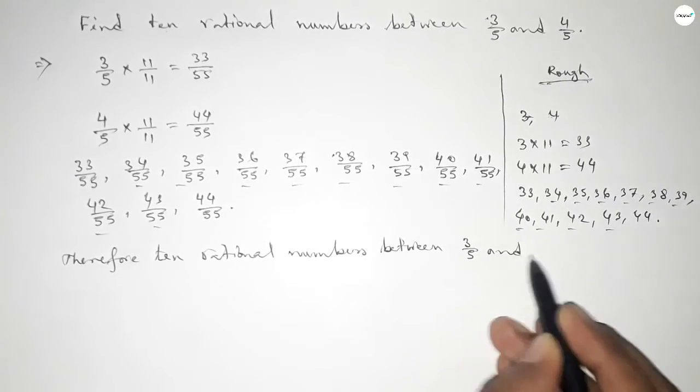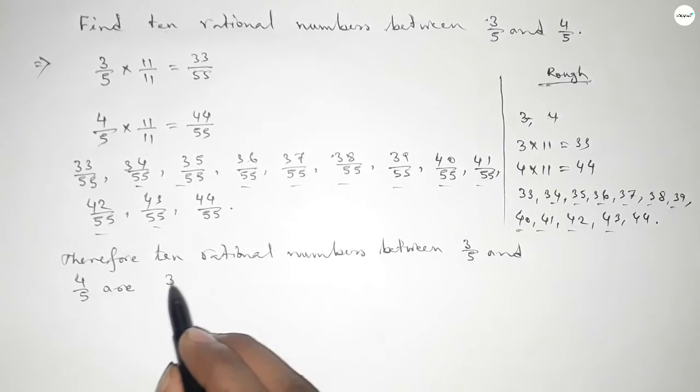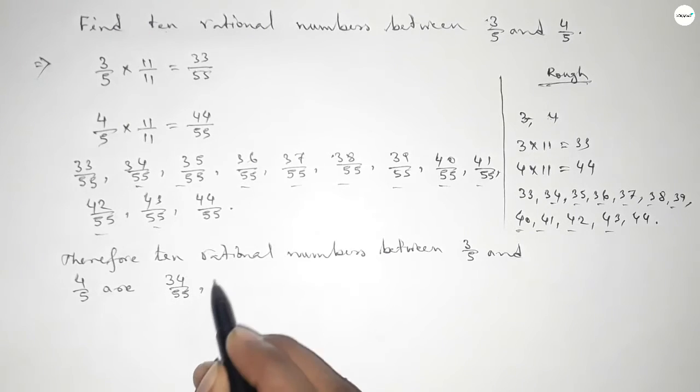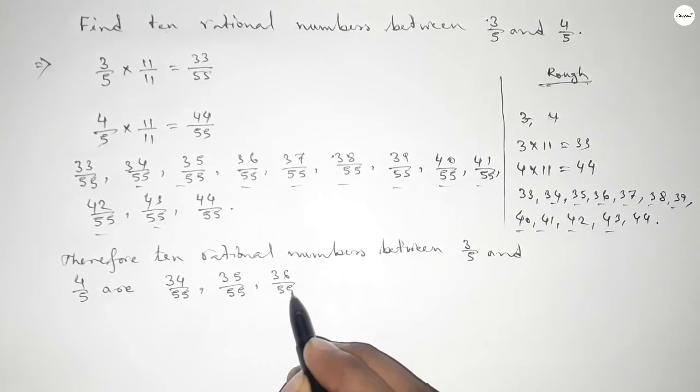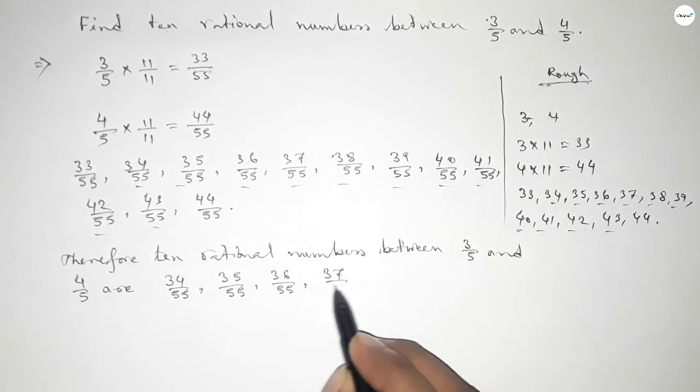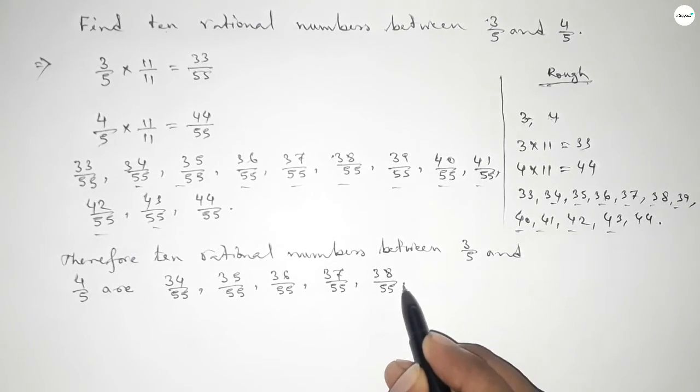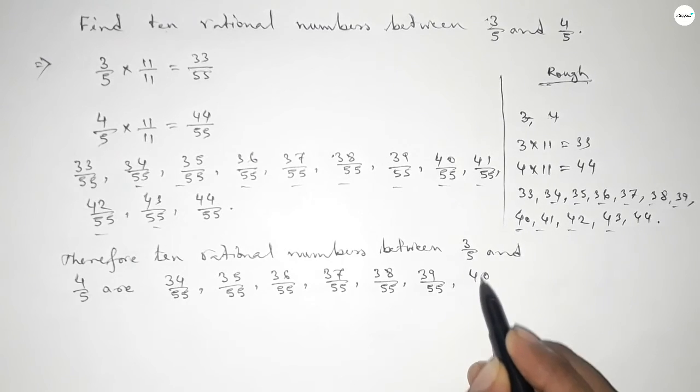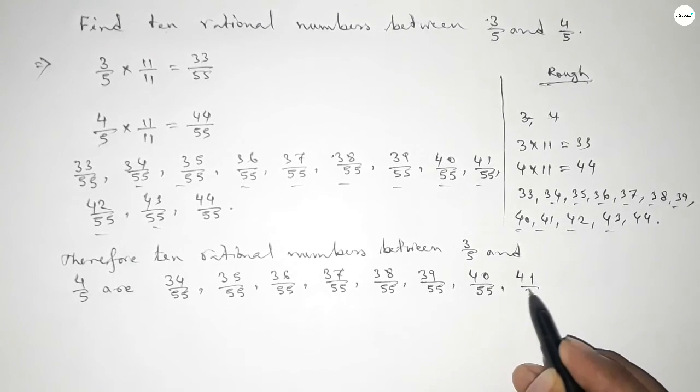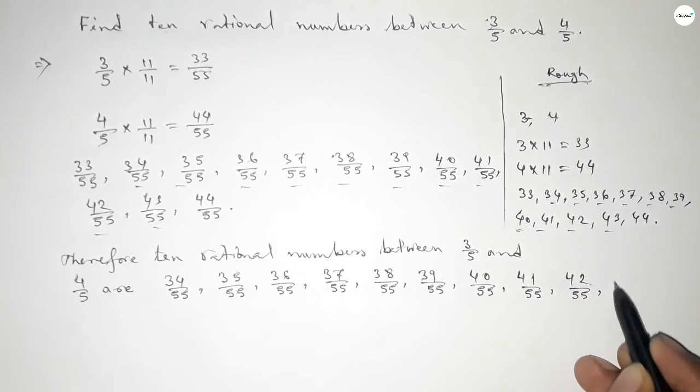First one is 34 over 55, 35 over 55, 36 over 55, 37 over 55, 38 over 55, 39 over 55, and last one 43 over 55. So this is the process to find out 10 rational numbers between 3 over 5 and 4 over 5.